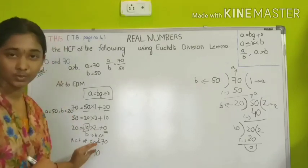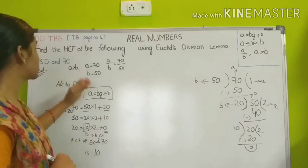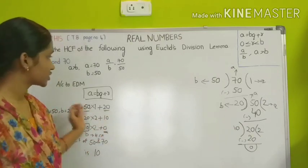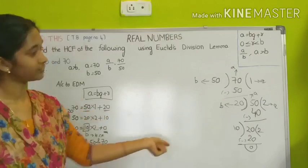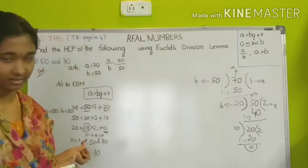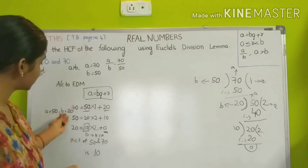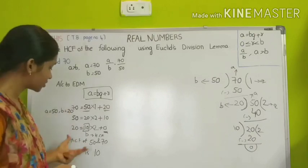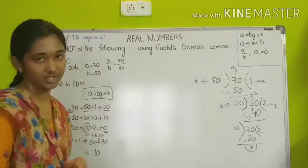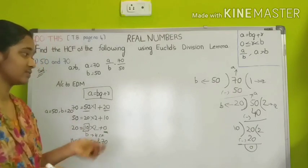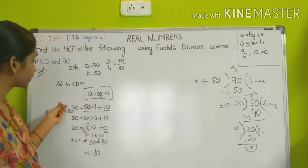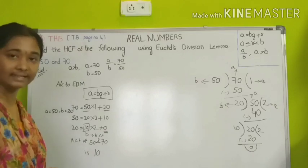This is the way to find the HCF of two numbers using Euclid's division lemma. As we are doing it for the first time, we did the full division process to clearly understand and to check the answer. In the next two problems, we are not going to do the long division — we can find the HCF using Euclid's division lemma equation directly.